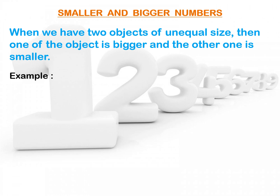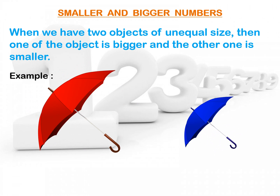Now, look at these umbrellas. We have two umbrellas here. The size of both the umbrellas is not the same. Here, the red umbrella is bigger than the blue umbrella. So, we can say that the red umbrella is bigger and the blue one is smaller.